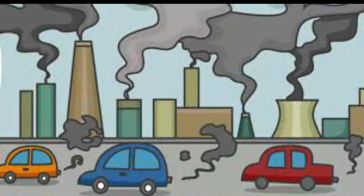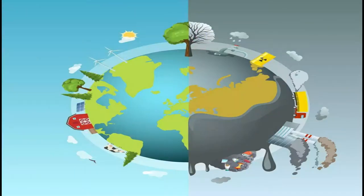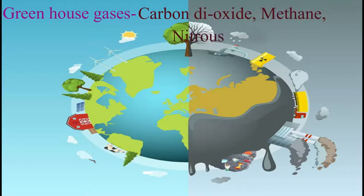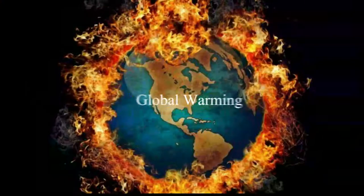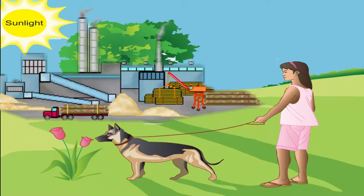Industries, vehicles, and other sources release greenhouse gases such as carbon dioxide, methane, and nitrous oxide. Due to the rising levels of these gases, the earth's temperature is continuously increasing. This is called global warming. Global warming is negatively affecting humans, plants, and animals.